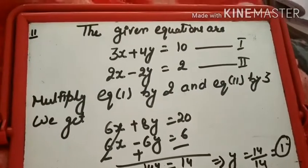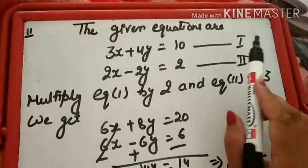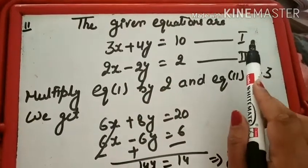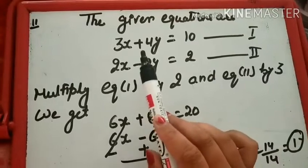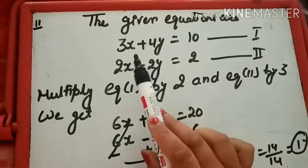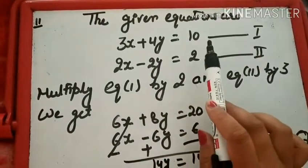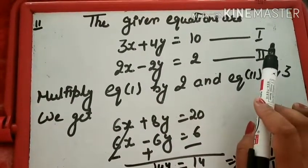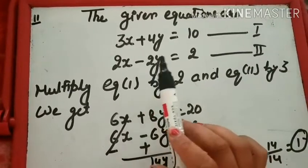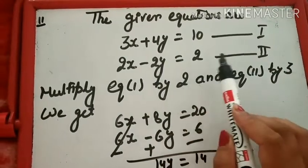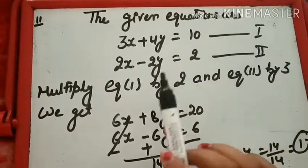Second example लिया है हमने। The given equations are: 3X + 4Y = 10 — इसको हम First नाम दे देंगे — and 2X − 2Y = 2 — इसको हम Second नाम दे देंगे।